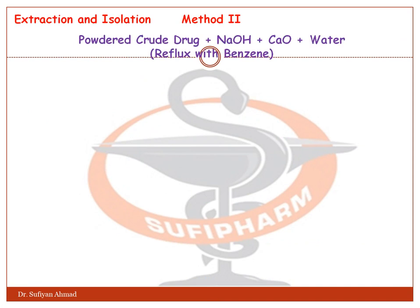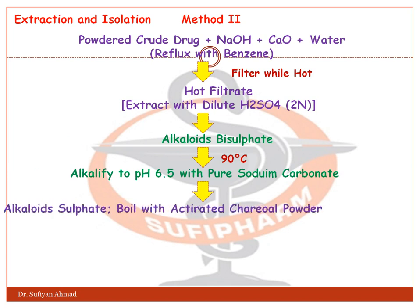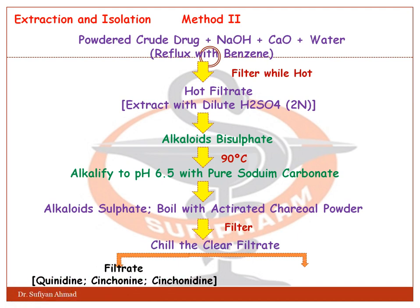Recrystallize the quinine sulfate with hot water. Dissolve it in dilute sulfuric acid and add ammonia solution — pure quinine crystals separate out. Method 2: The powdered drug is treated with ammonia, calcium hydroxide, and water, then refluxed with benzene and filtered while hot. The hot filtrate is extracted with dilute H₂SO₄ (2N). The alkaloid bisulfate is acidified to pH 6.5 with sodium carbonate. The alkaloid sulfate is boiled with activated charcoal powder as a decolorizing agent, then filtered to obtain a clear filtrate.